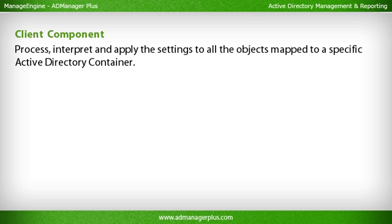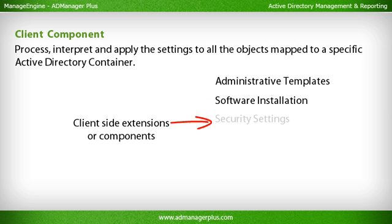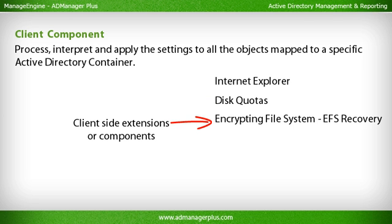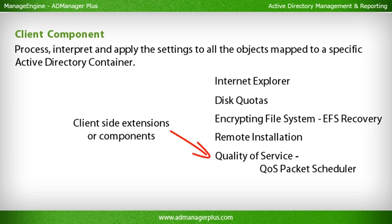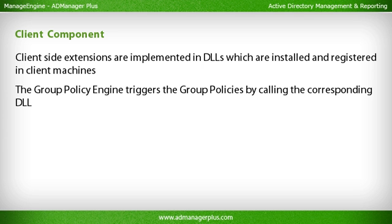The Client Component interprets and applies the group policy settings to client computers and target users. Client-side extensions are components running on client systems and are responsible for processing, interpreting, and applying the settings to all objects mapped to a specific Active Directory container. The default client-side extensions include: Administrative templates, Software Installation, Security Settings, Folder Redirection, Scripts, IP Security, Internet Explorer Maintenance, Disk Quotas, Encrypting File System (EFS) Recovery, Remote Installation, and Quality of Service (QoS) Packet Scheduler. Client-side extensions are implemented in DLLs installed and registered in client machines during OS installation. The group policy engine triggers the group policies by calling the corresponding DLL from the registry using the corresponding component registry settings.